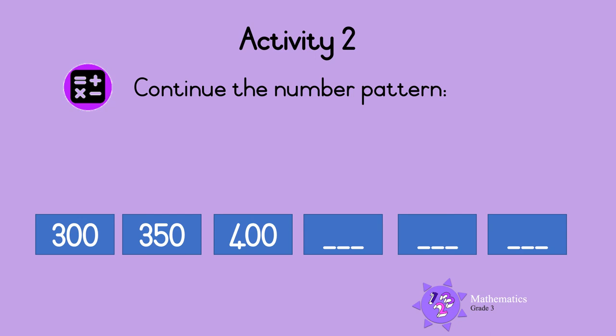Last one! Continue this number pattern: 300, 350, 400. What's next? What do we do to 300 to get 350? Do you see that we add 50? This means we are counting forwards in 50s, so we add 50 to 350 to get 400.